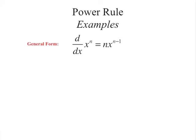Here are a few examples. The first: if you were asked to differentiate x cubed, you'd bring that 3 down and then go 3 subtract 1, which is 2. So it would be 3x squared.